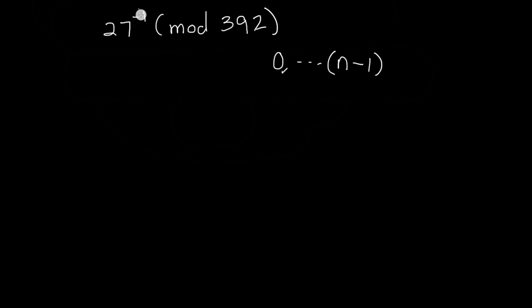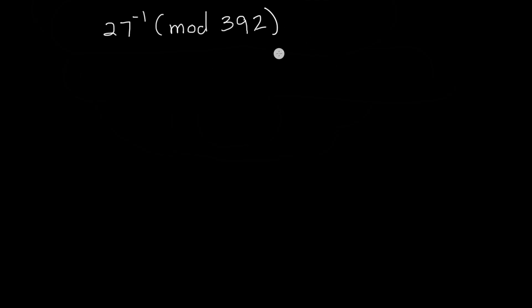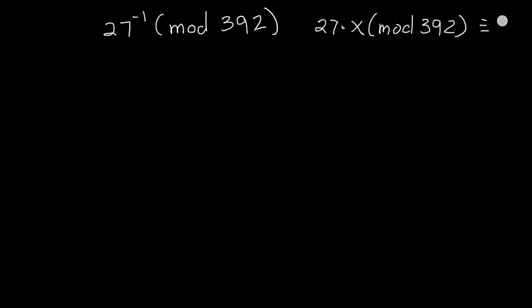So 27 to the minus 1, or 27 inverse, is really a fraction — it's 1 over 27. We don't really have any way to represent a fraction if we're only dealing with the numbers from 0 all the way up to 391. The question is: how can we represent 27 inverse as one of these numbers from 0 to 391 in mod 392? Essentially what we want to find is something we can multiply 27 by, mod 392, and have that result be equivalent to 1.